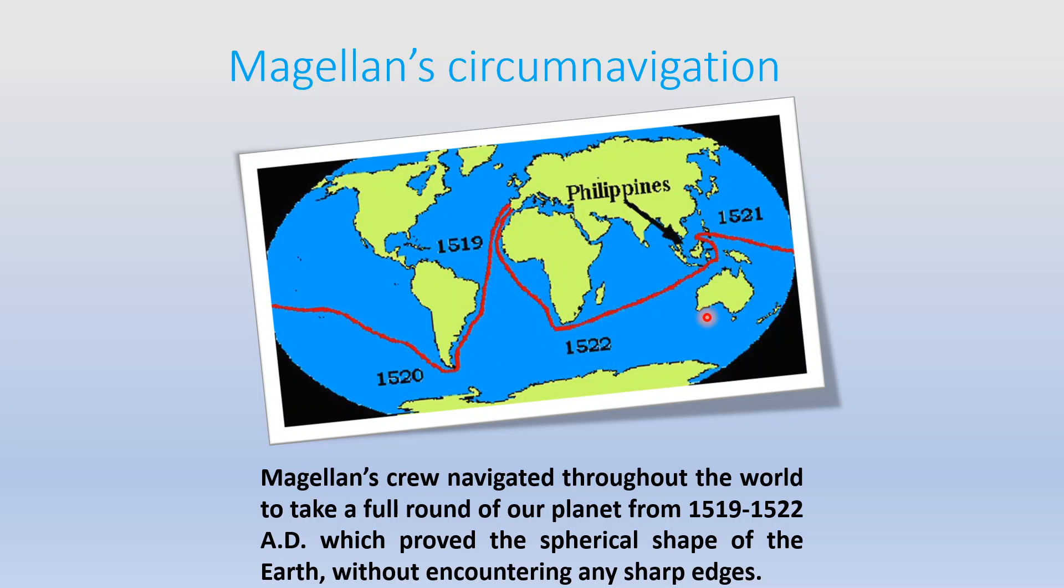When he went around the Earth, he did not encounter any sharp edges, which was earlier believed that if people go towards the end of the Earth, they will fall off. But he returned from the place where he started, that is in Spain. So this also proves that the Earth is spherical in shape.